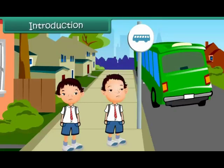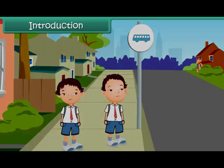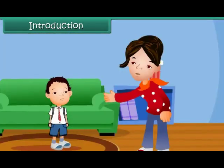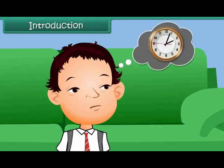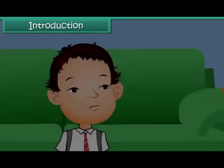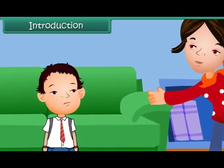Kush has missed his school bus again. His mother is very angry with him. Kush knows the cause of this problem — he cannot read time from a clock. As a result, he gets delayed. But he has made up his mind today. He will learn to read time and never miss his school bus.